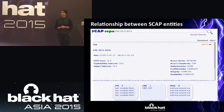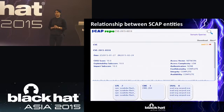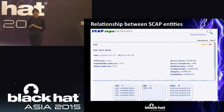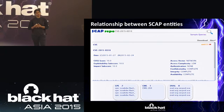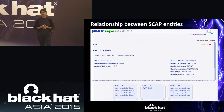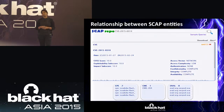Different SCAP entities can be related. For example, a CVE is related to some products — here it's Adobe Flash Player. You also have OVAL checks that you can click and execute to see if you have that vulnerability. And every CVE has a CWE weakness enumeration associated with it, which you can go ahead and research.